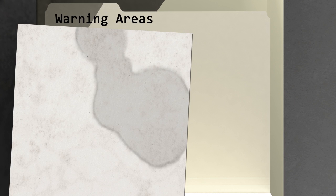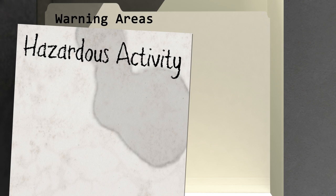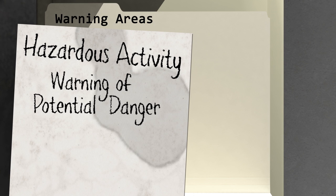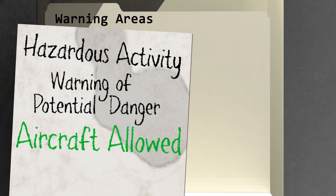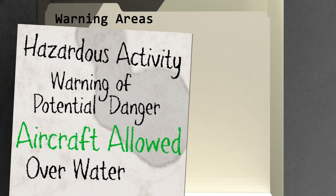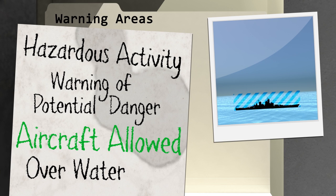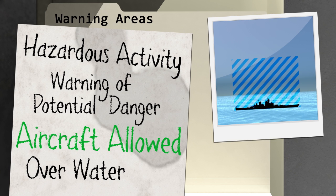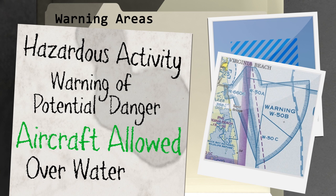Warning areas contain activity that may be hazardous to non-participating aircraft. They exist to warn non-participating pilots of potential danger, but do not prevent or limit other aircraft from operating within that area. These areas exist over domestic and international waters as close as 3 nautical miles from the coast. Unless otherwise depicted, this airspace starts from the surface and extends up to a designated altitude. They are depicted on sectional charts with blue hashed lines, this time starting with the letter W.